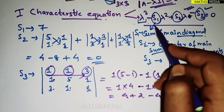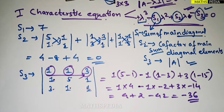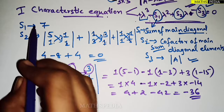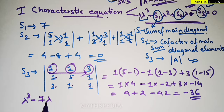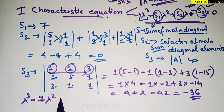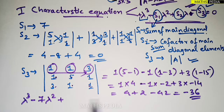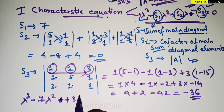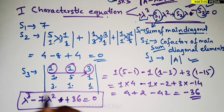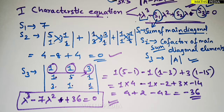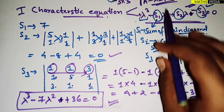Substituting into the formula: λ³ − 7λ² + 0·λ − (−36) = 0, which simplifies to λ³ − 7λ² + 36 = 0. The λ term disappears since S2 = 0. Now we'll verify this with the traditional method.